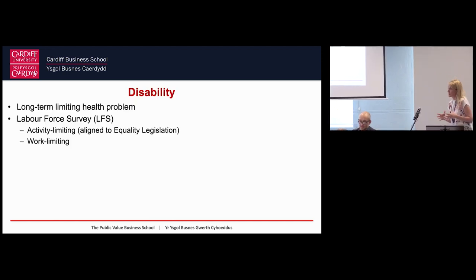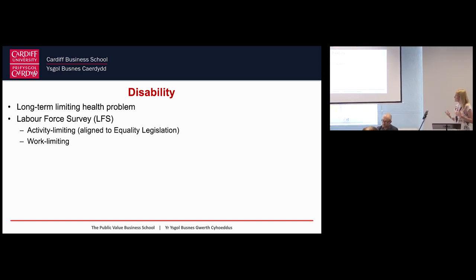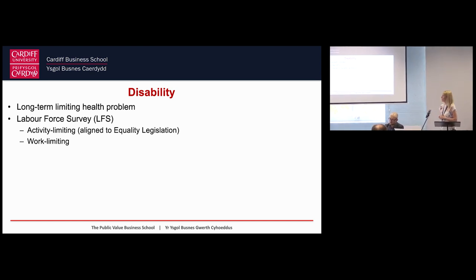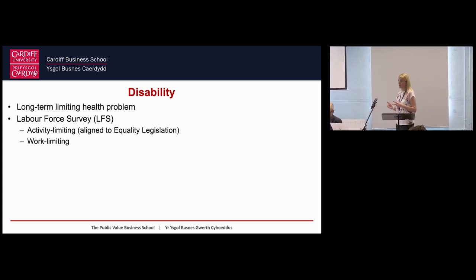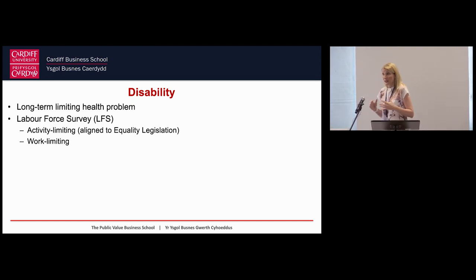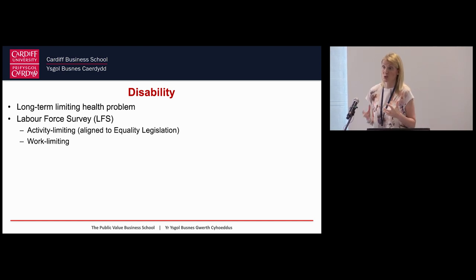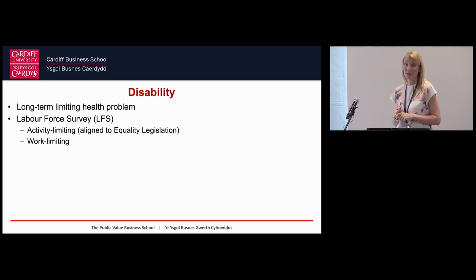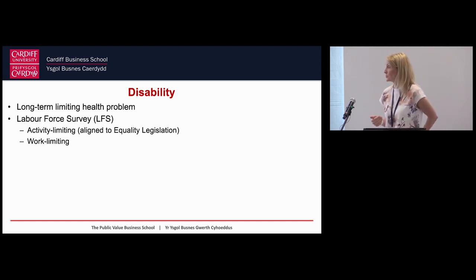When I talk about disability, I am a labour economist with an interest in inequality, so I'm interested in disability as a protected characteristic under UK legislation. In terms of the concept, I'm generally talking about a long-term health problem which is limiting in some way. There are typically two definitions used in the academic literature: one is work limiting - restrictions on the nature or type of work you can do; the other is activity limiting, around day-to-day activities, which aligns to equality legislation. The LFS has both measures, but there's been a movement towards the activity limiting definition.